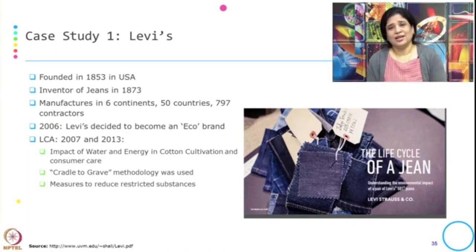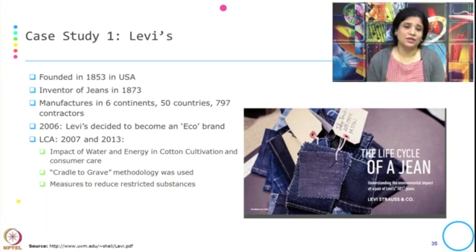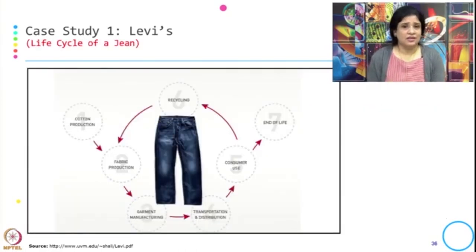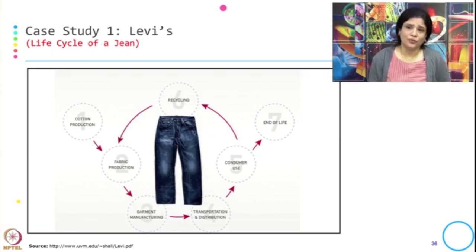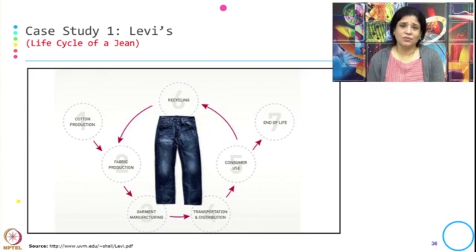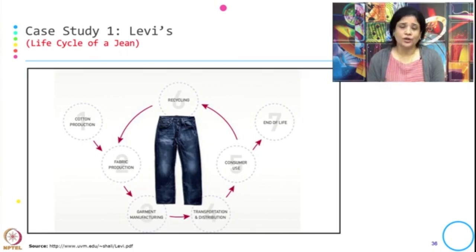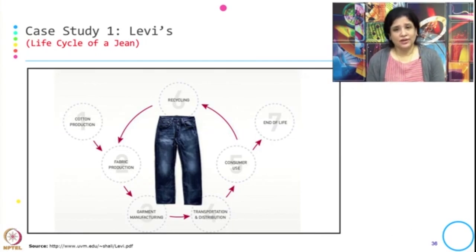They used the cradle-to-grave LCA variant and also took measures to reduce the restricted substances in the product. The life cycle of the product starts from cotton production — sourcing of the raw material — then fabric production, garment manufacturing, transportation and distribution, consumer care, and end of life. Part of it goes into recycling and part into disposal.